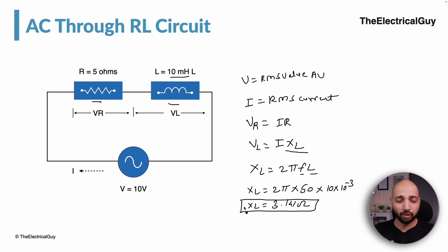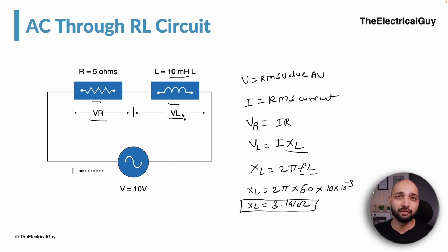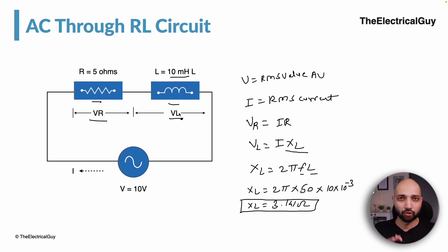You have to understand that resistance does not depend upon frequency — it simply opposes the flow of electrons. But the value of inductive reactance XL depends upon frequency, so it will be different for 50 Hz and different for 60 Hz. Just take note of that.